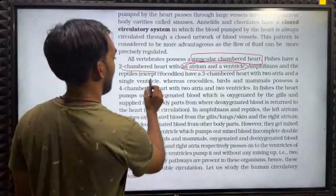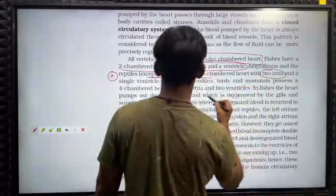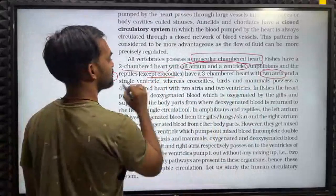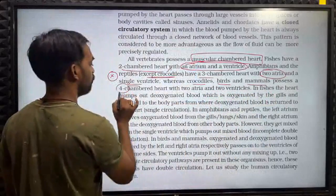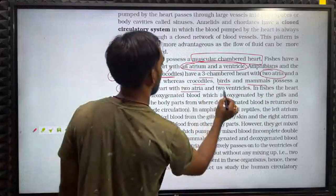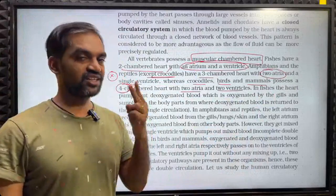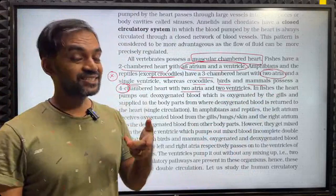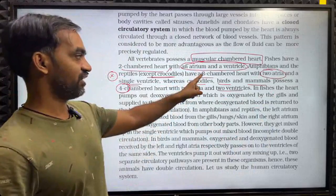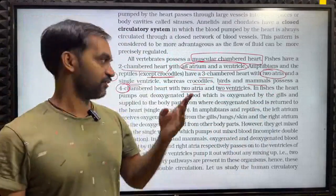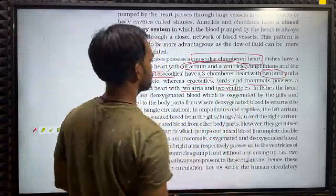Amphibians and reptiles, except crocodiles, have a three-chambered heart — two atria and a single ventricle. Crocodiles, all birds, and all mammals possess a four-chambered heart with two atria and two ventricles.